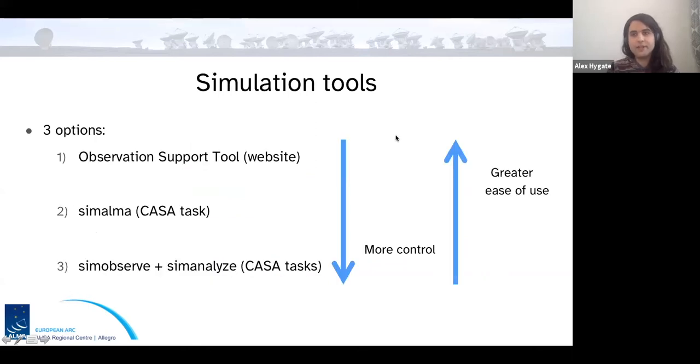So there are three different options for simulating observations. These are the observation support tool, which is a website interface, simalma, which is one single CASA task that takes the whole process end to end. And then the third option, which is simobserve and simanalyze, which are two CASA tasks. And so these go in order of most control, and also inversely greater ease of use. So the website is, in general, the easiest to use, but gives you the least amount of control. Whereas for full control, you can use simobserve and simanalyze. But these are going to require more effort on your behalf to simulate.